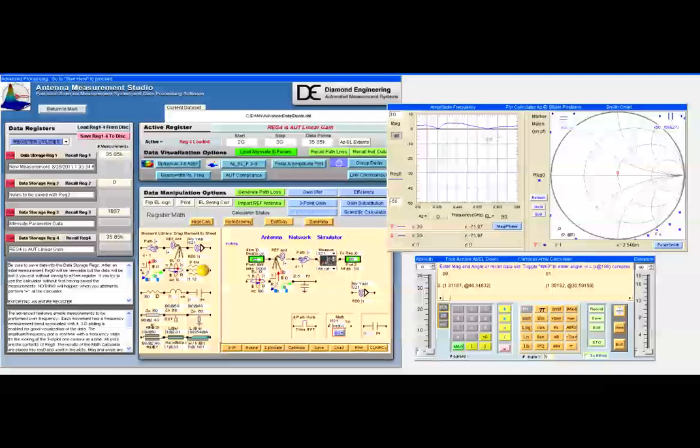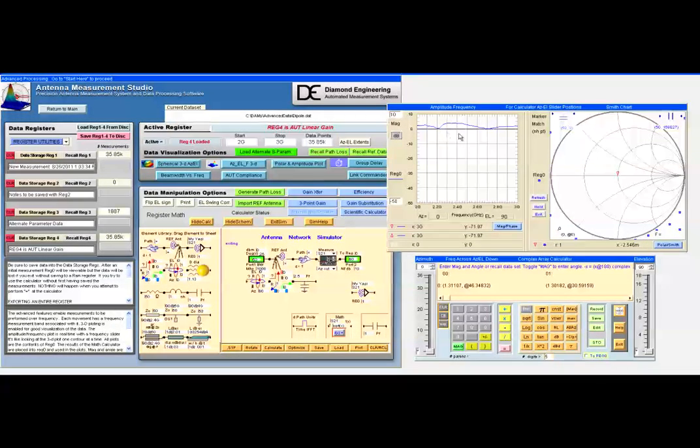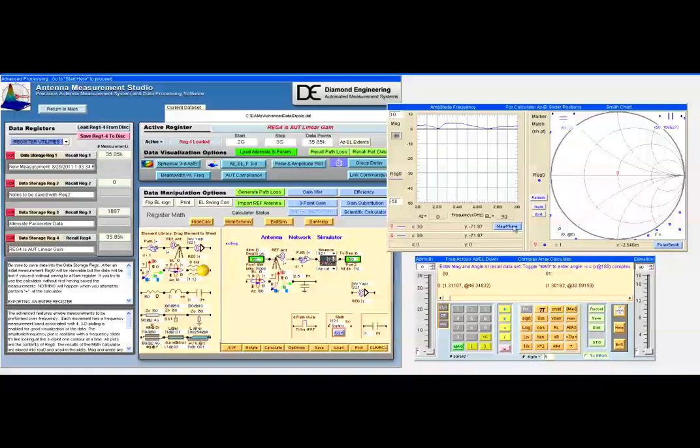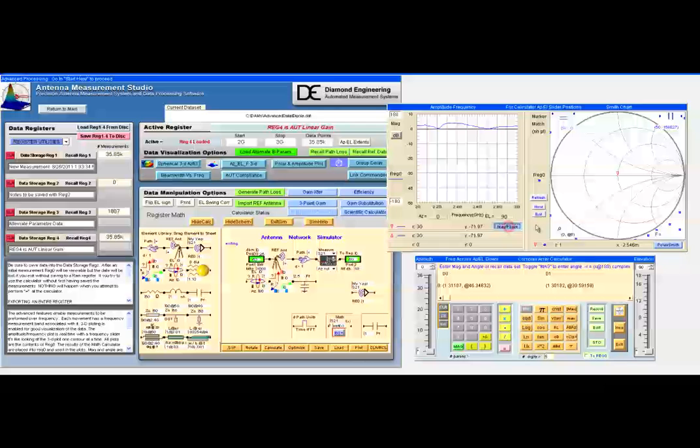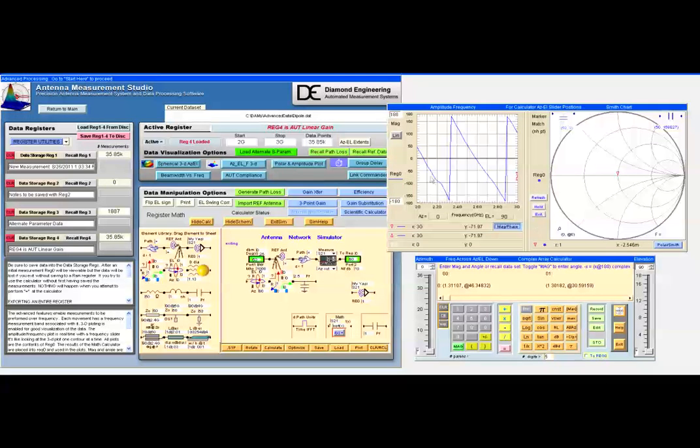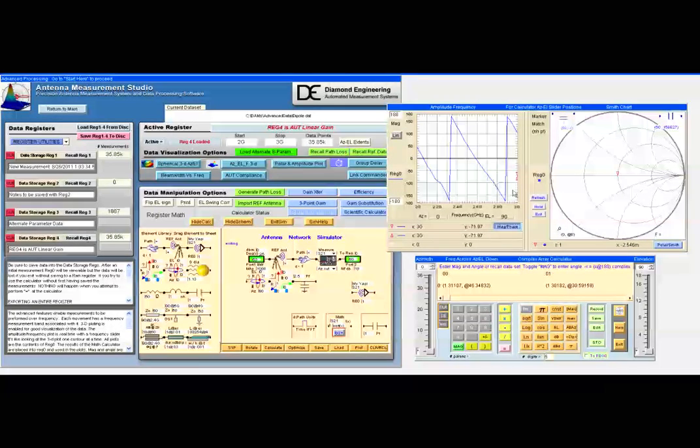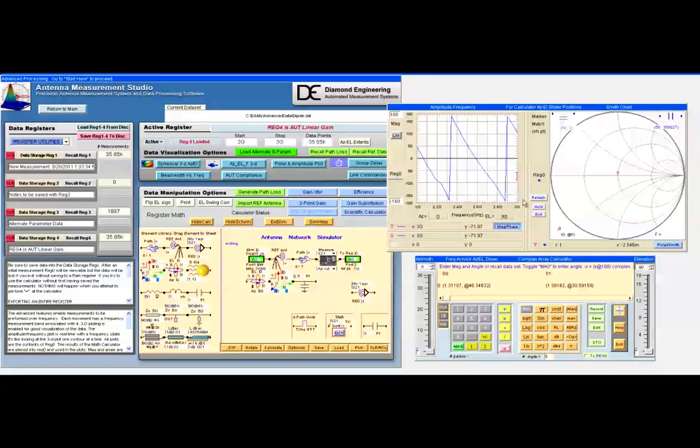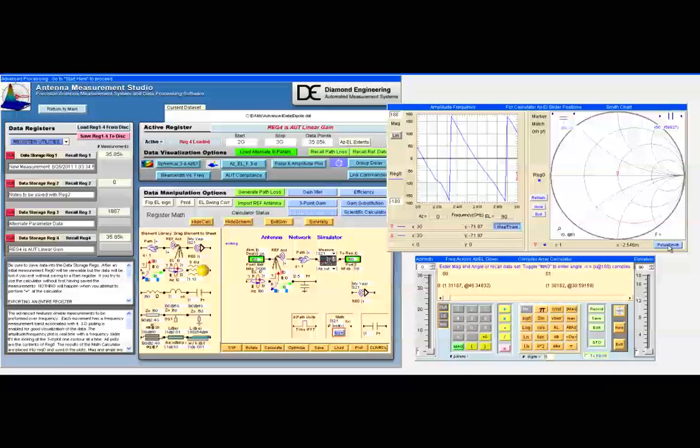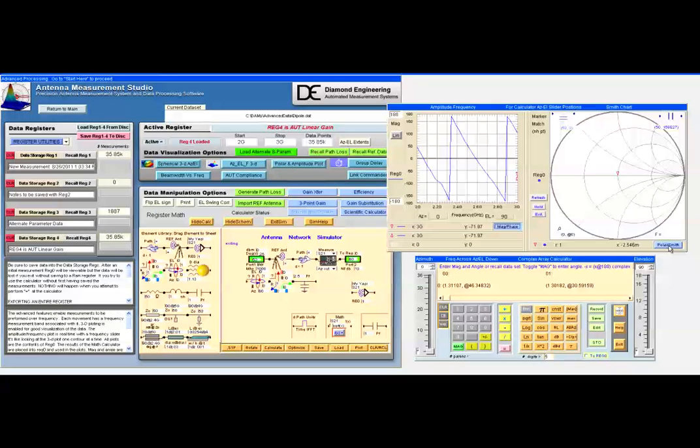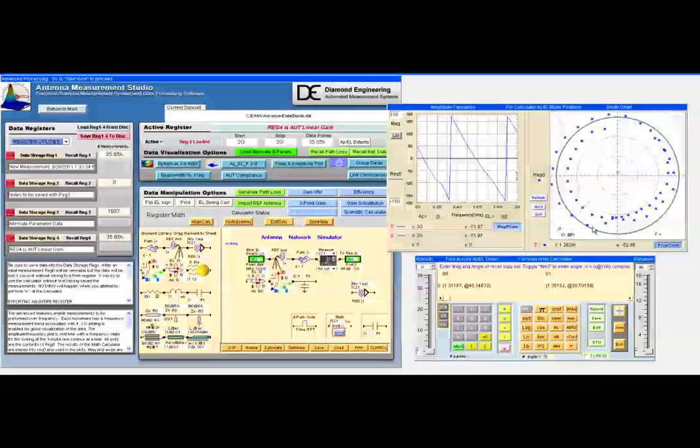If the measurement was a vector measurement, we can also view the phase. Involving phase, we see the phase in minus 180 to plus 180 degrees cyclic. We can also view the same data in a polar plot. In this case, we have a smith plot. Now we have a polar plot.